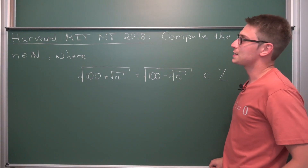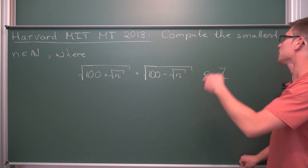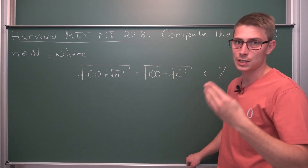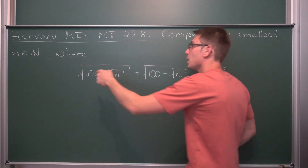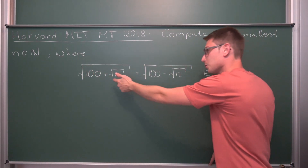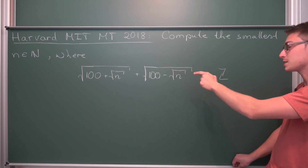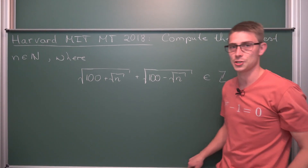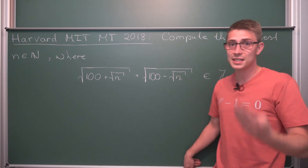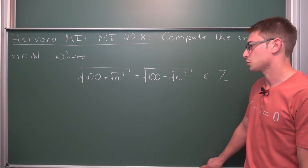From the Harvard-MIT Maths Tournament of 2018: compute the smallest n element of the natural numbers — meaning positive integers without zero — where we have an addition of nested radicals that are conjugates to one another, and we want to find n where the entire summation is an element of the integers. It's a very nice denesting radicals exercise and I hope you enjoy what you're going to see today.